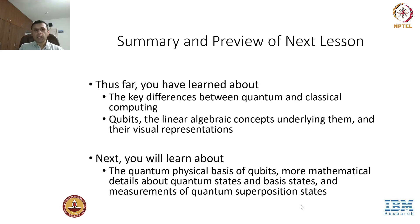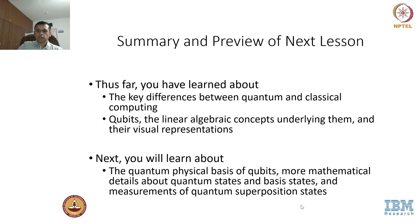This concludes the first module. You have learned about the key differences between quantum and classical computing, about qubits, the linear algebraic concepts that underlie them, and their visual representation using the Bloch sphere. Next, you will learn about the quantum physical basis of qubits, more mathematical details about quantum states and basis states, and how to measure quantum superposition states — building on the idea that a qubit collapses to state 0 or 1 when measured.